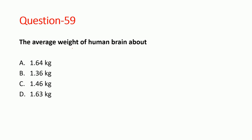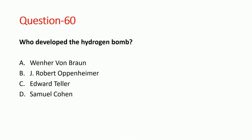Next question: the average weight of the human brain is 1.46 kg, which is approximately 2% of total body weight. Option C is correct. Next question: who developed the hydrogen bomb? The hydrogen bomb was developed by Edward Teller. Option C is correct.